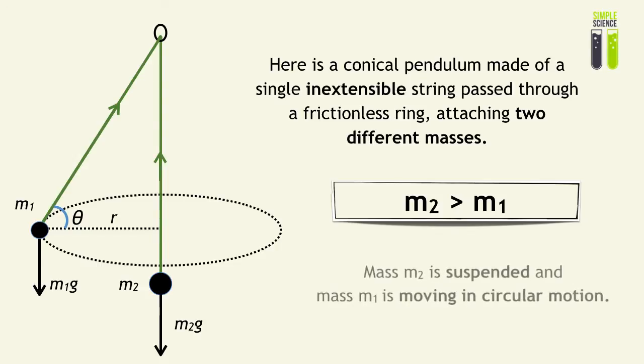What you're basically having is you're trying to rotate M1, a smaller mass, to support and suspend a greater mass M2. You can see there are some obvious applications to this.